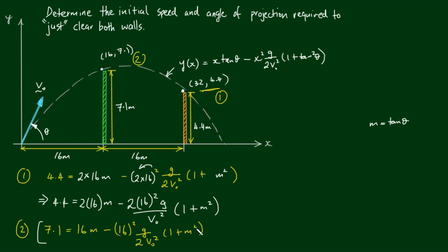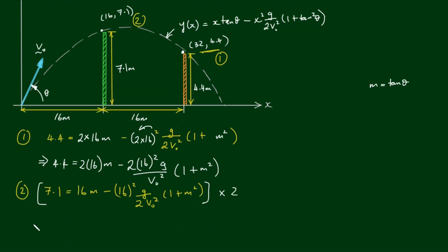Next, I'm going to multiply this entire expression by 2. So 7.1 times 2 gives us 14.2 equals 2 times 16m minus 2 times 16 squared g divided by 2v0 squared times 1 plus m squared. The 2 on top and bottom cancel. I'll label this equation b and the previous one as equation a.